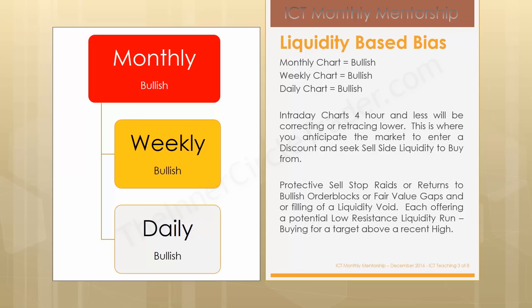Protective sell stop rates or returns to bullish order blocks or fair value gaps and/or filling of a liquidity void, each offering a potential low-risk liquidity run — buying for a target above a recent high. You're going to be aiming for something on the daily chart preferably, looking for buy stops above the marketplace on a daily high. It could be yesterday's high, last week's high, last month's high, or an intra-week high. Try to find something on the daily chart to frame your buyer idea, then look for something on the weekly chart that would support even higher. If you have a weekly target, you'll have much better odds behind your trade — and then preferably the monthly chart, which if bullish will put you in sync with the institutional order flow seen by studying that timeframe.